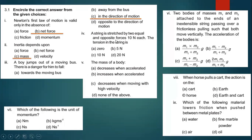Part four: a string is stretched by two equal and opposite forces of 10 Newtons each. The tension in the string is — option A is the right answer — zero. The two forces are applied in opposite directions; since they are equal and opposite they cancel each other, so the total tension will be zero.